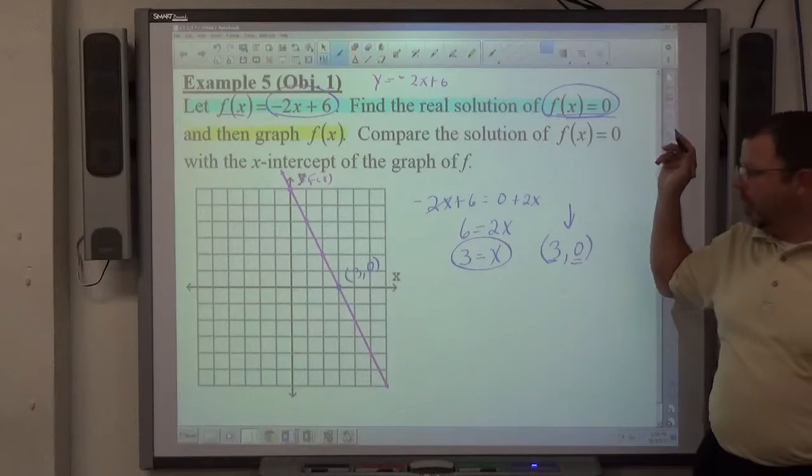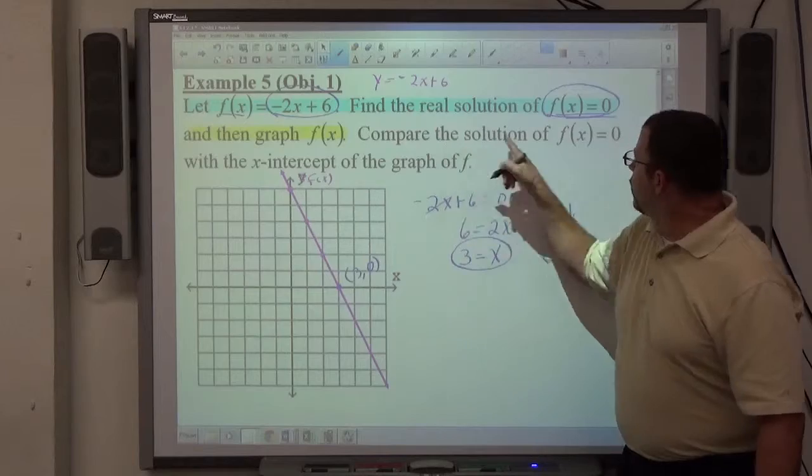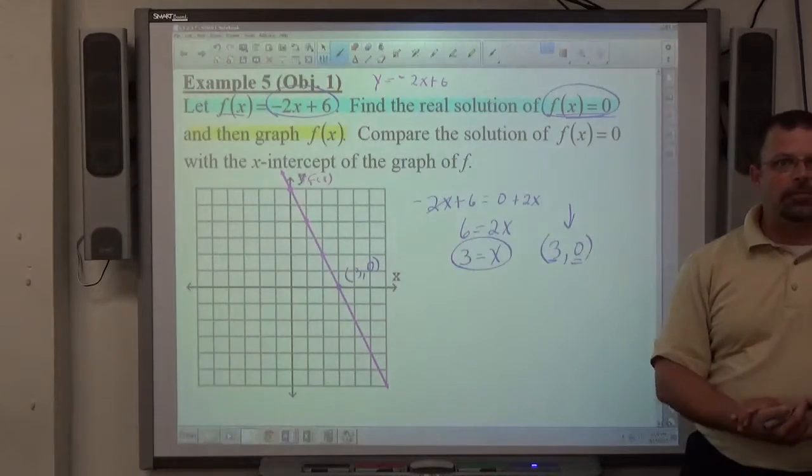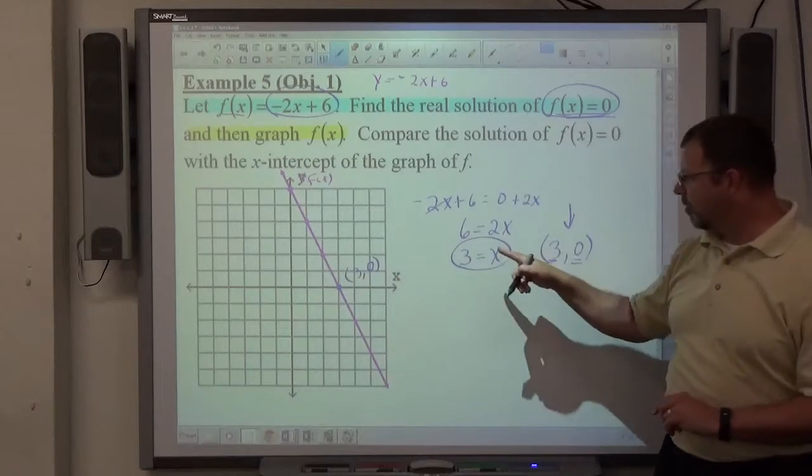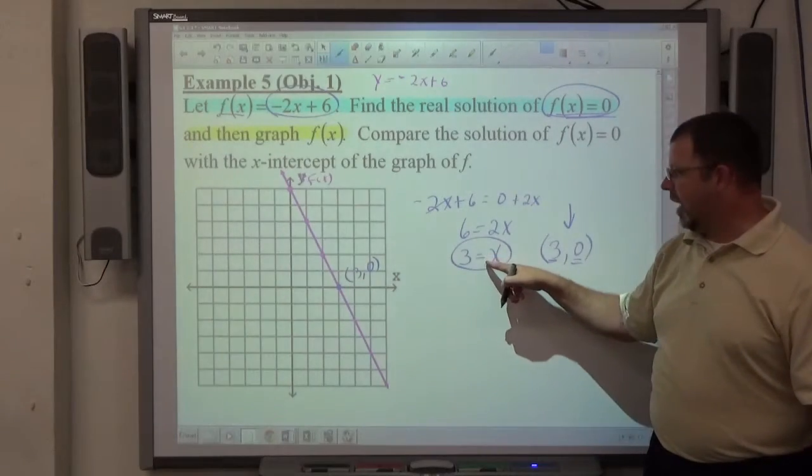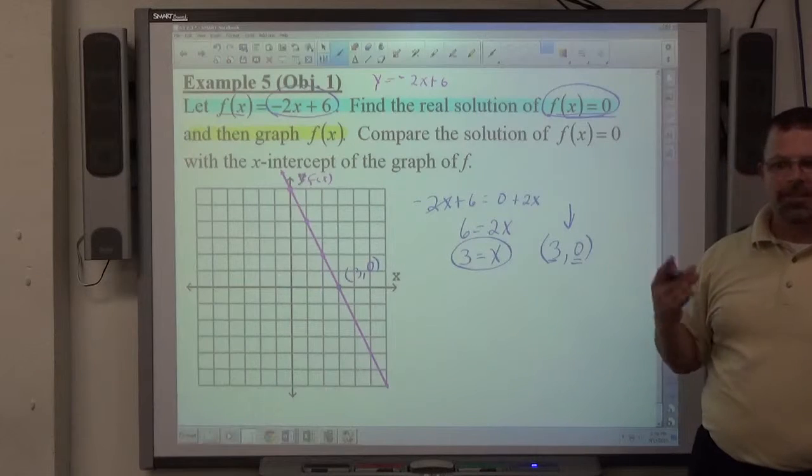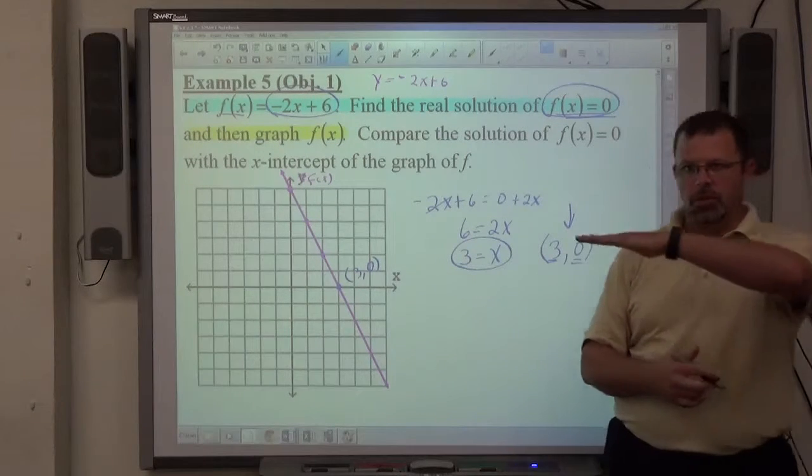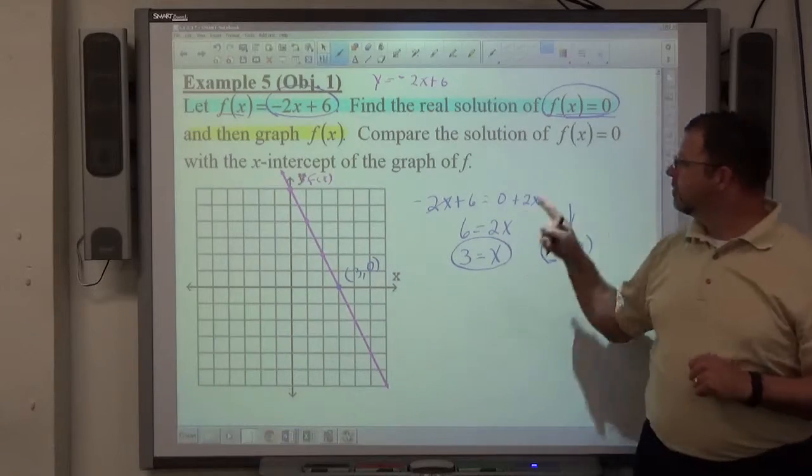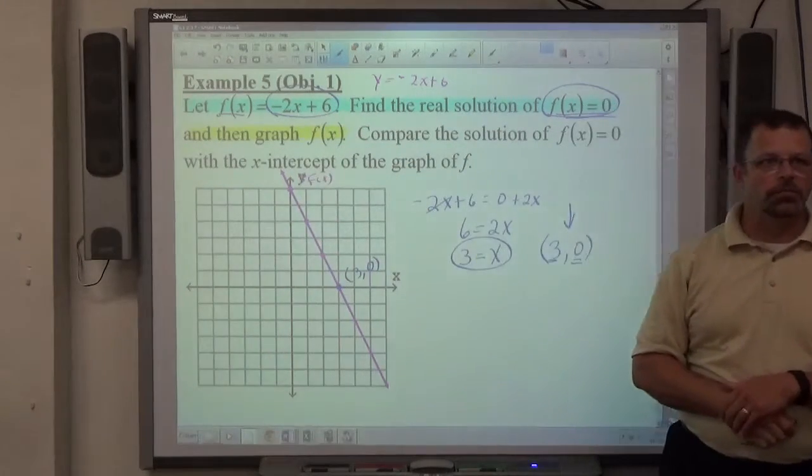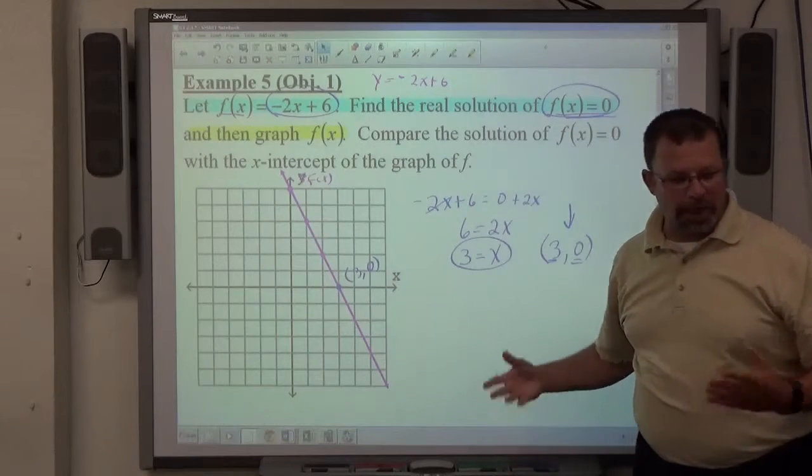Am I losing people? So compare the solution of f of x equals 0 at the x intercept to the graph of f. They should always be the same. The x intercept should be equivalent to the x value when f of x equals 0 because they represent the exact same thing. So x intercepts occur when y equals 0, when y equals 0 and you solve for x, you should find the x intercept. So that's that.